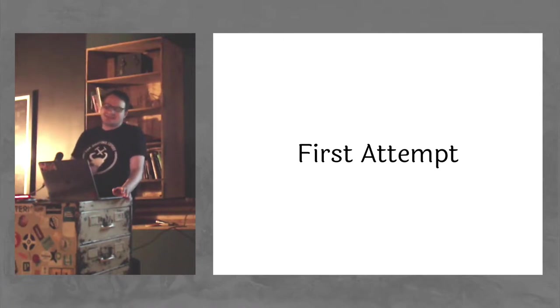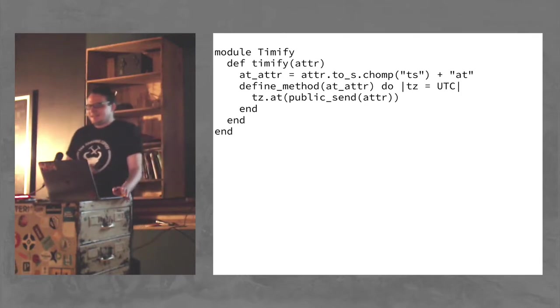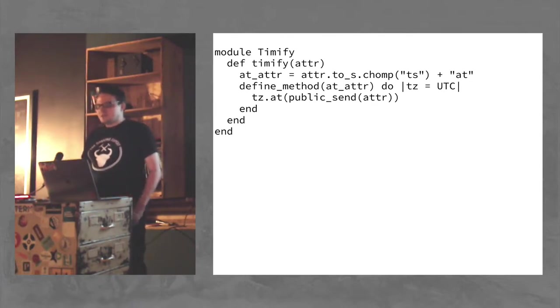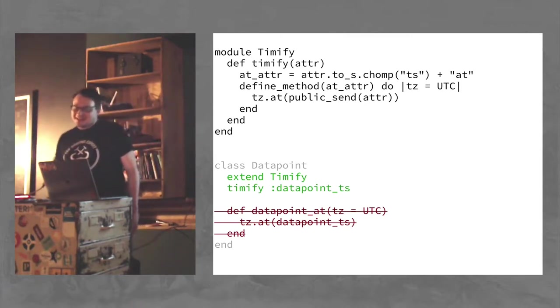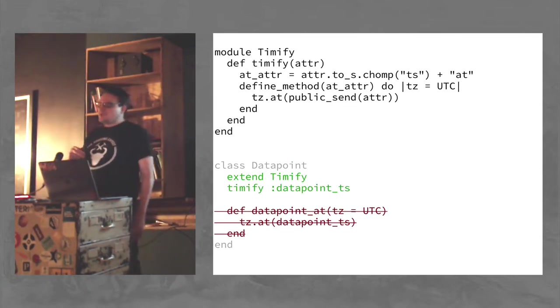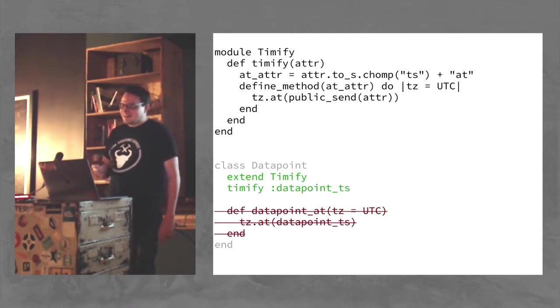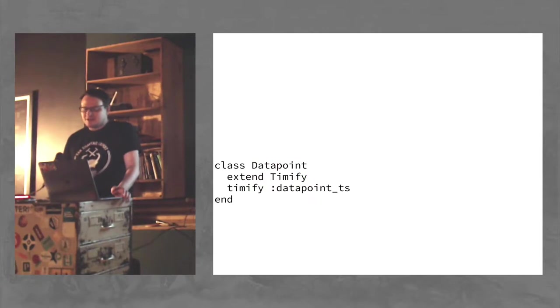So I was feeling clever and I was like, I'm going to metaprogram my way around this. Maybe not best first instinct, but there we go. So this was my first attempt. I created this module that gives you a method called timeify. It takes an attribute and it defines a method that is the at attribute, whatever that is, and it does that conversion for you. So now we can extend it in our various classes and call timeify data point TS, and we no longer need to write that method. So we took that three lines and turned it into two lines, which is, I guess, a win.